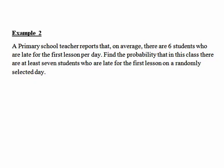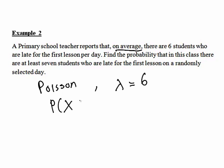Let's move on to a second scenario and decide whether it is binomial or Poisson. A primary school teacher reports that on average there are 6 students who are late for the first lesson per day. Find the probability that in this class there are at least 7 students who are late for the first lesson on a randomly selected day. We are talking about an average, so we use the Poisson distribution, as this example gives an average rate — the number of students late per day. The parameter is lambda equals 6, and we want the probability that x is greater than or equal to 7.